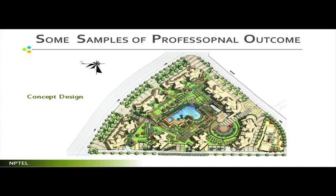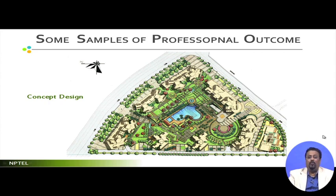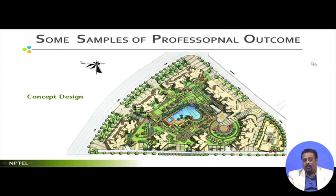Let me show some samples of professional outcomes — starting with concept design. This is an example of a concept design in which the buildings, other areas, and the entire landscape are clearly indicated. This concept design will be reviewed by the user, owner, and possibly a committee of experts. Your role is to explain every aspect of it. Note that in this particular concept design, everything is graphically done — nothing is annotated.